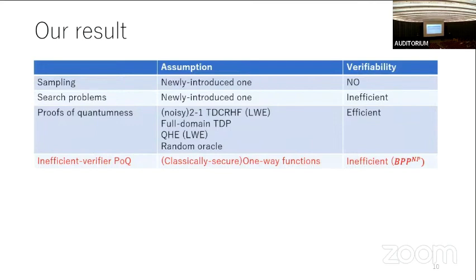Our result partially answers this open question. We introduce a new concept called Inefficient Verifier Proofs of Quantumness (IVPoQ) and show that this can be constructed from classically secure one-way functions. Here only classical security is sufficient because soundness of proofs of quantumness is only against a classical prover. Classically secure one-way functions are the minimum assumption in classical cryptography, so we can show quantum advantage based on this minimum assumption.